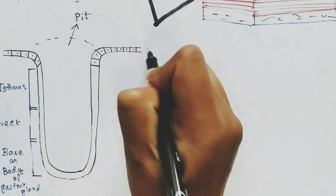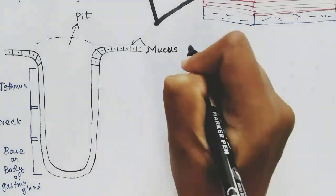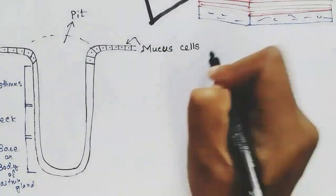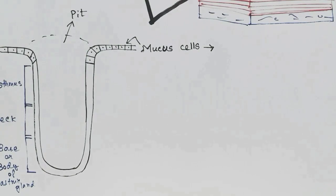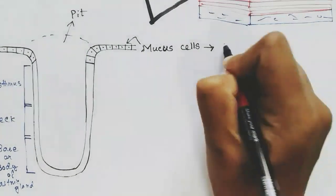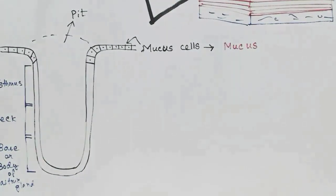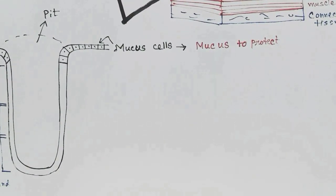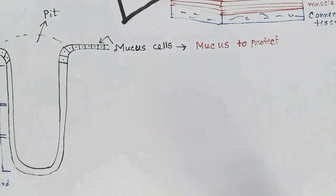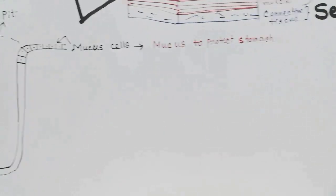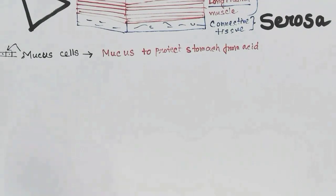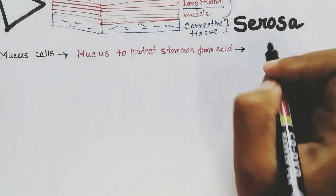Mucus cells secrete mucus to protect the stomach from the acidic environment. These mucus cells are present in the outer region or pit region of the gastric glands.